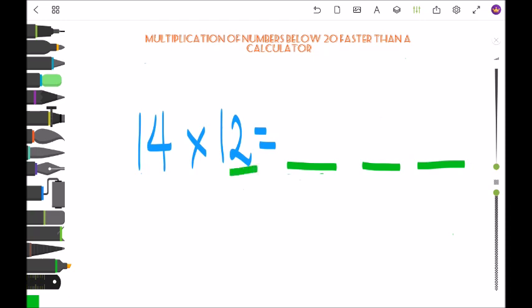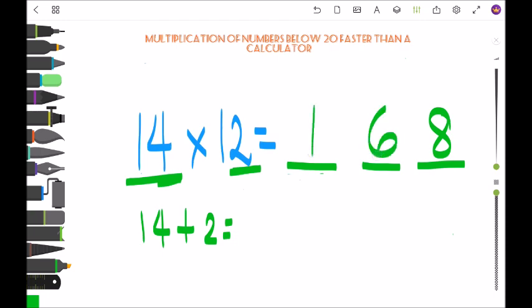First is the last two digits, 4 times 2 is 8, and then 14 plus 2 is 16. So 14 times 12 is 168.